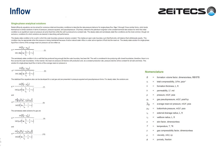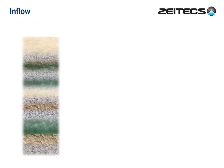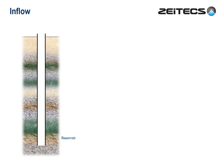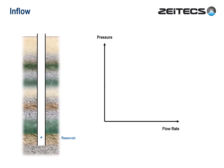I didn't realize then that some 30 years later I'd be teaching artificial lift and would have to find that better way. So here we go. Let's start by drilling a well into the reservoir and considering an imaginary point at reservoir depths. This point will have a certain ambient pressure, known — unsurprisingly — as reservoir pressure, or sometimes shut-in bottom-hole pressure.